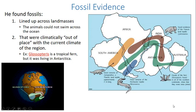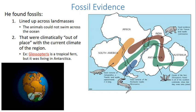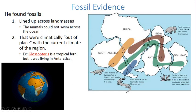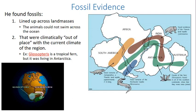What was also very significant about Glossopteris was that it was a tropical fern found in Antarctica. How would you have a tropical fern in Antarctica? Because Antarctica used to be closer to the equator where it was warm and could support a tropical fern, and then it drifted south to where it is now.